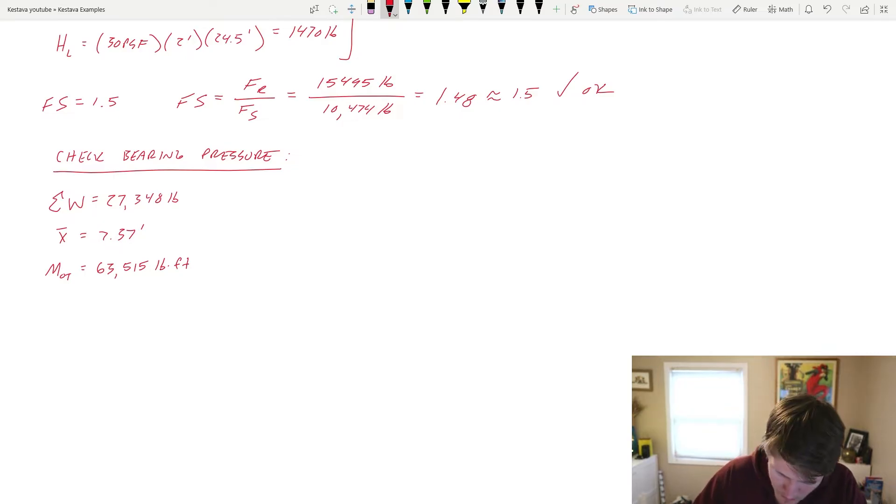Now, the first thing we want to do is ultimately find E, our eccentricity, which we know is equal to M over P. P, in this case, is our summation of our weight. M, simply put, is our overturning moment, but there's an additional piece here with a retaining structure that helps our case.